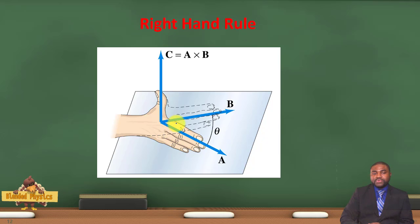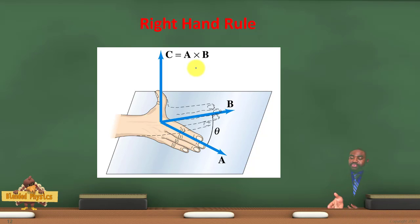If you sweep your right hand from vector A towards vector B, your thumb will automatically point in the direction of A cross B. For example, if this is vector A and this is vector B, then A cross B will be pointing upwards. So that vector will be perpendicular to the plane containing A and B.